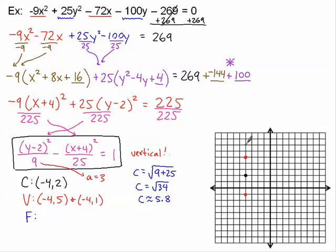So I'm going to be counting up and down 5.8. That gives me the points (-4, 7.8) and (-4, -3.8).